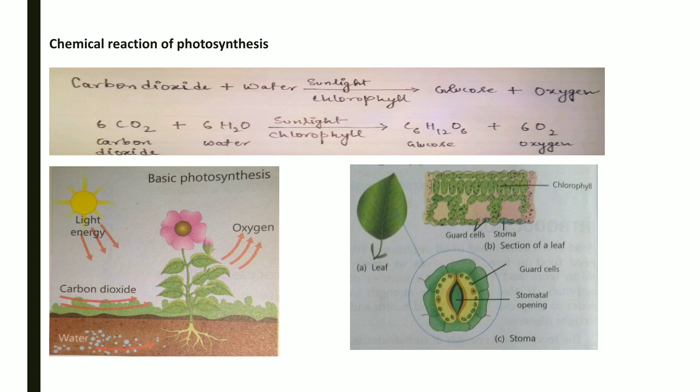This is the chemical reaction of photosynthesis, in which carbon dioxide reacts with water in the presence of sunlight and chlorophyll to form glucose and oxygen. Glucose is the first food product formed in plants. Two images are shown: the first illustrates the process of photosynthesis — how sunlight is absorbed and carbon dioxide enters the plant — and the second shows the location and structure of stomata.